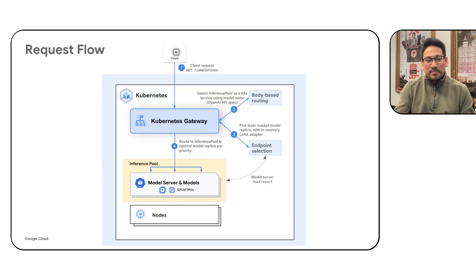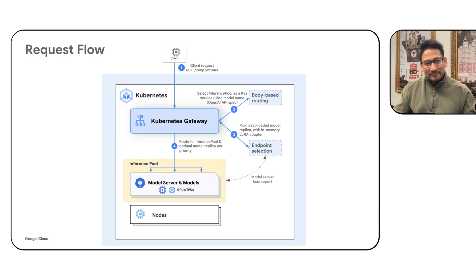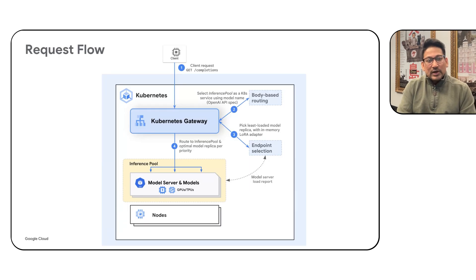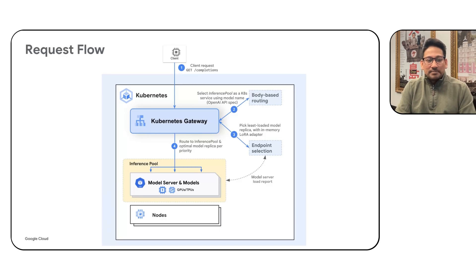GKE Inference Gateway is built on an open and extensible architecture. Underneath the Kubernetes Gateway API is Google Cloud's load balancing, which has been enhanced via extensions for inference workloads. Rather than routing only on request headers, it looks at the body of the request — supporting the OpenAI API spec — and uses the model name from the body to route to the correct model endpoint. Extensions also enable call-outs to AI safety services like Google Cloud Model Armor, and a process pulls metrics like KVCache utilization and outstanding queue length from the model server to select the optimal replica, propagating that information to the gateway for routing decisions.